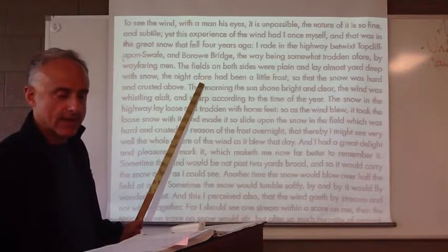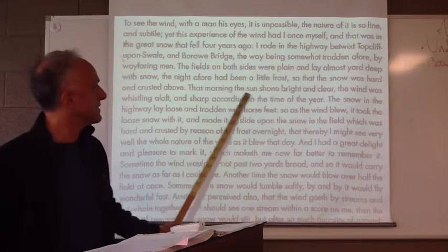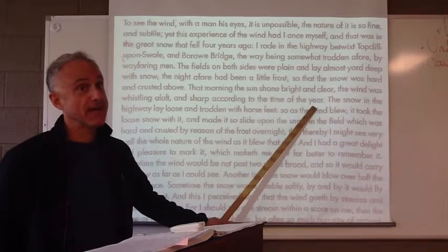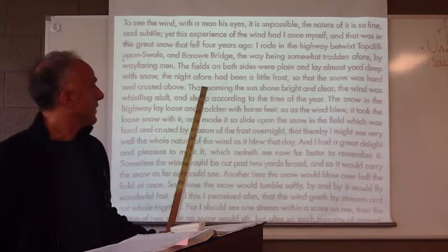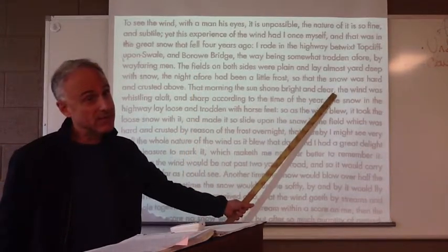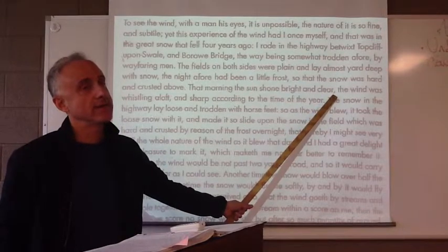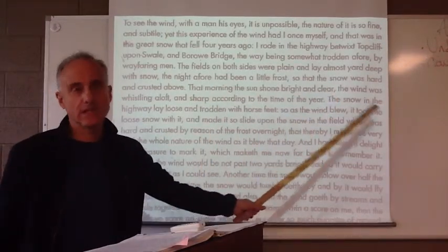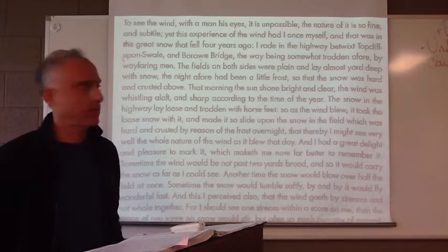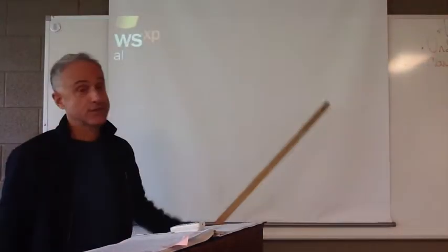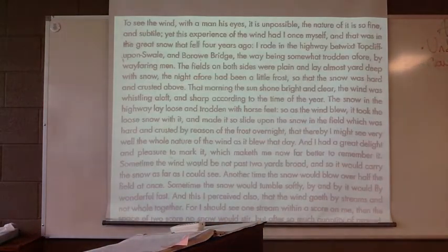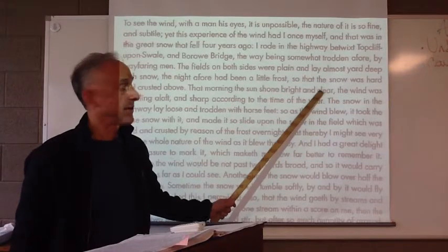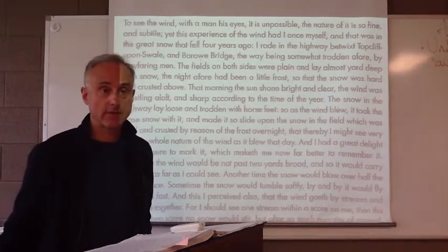Moving on, we find: 'That morning the sun shone bright and clear. The wind was whistling loft and sharp according to the time of the year.' There are a few things going on here. We have one independent clause — it stops here, but the author chooses purposefully to have one run-on in this whole passage. He put it there purposefully. He wants this sentence to continue on, to be lengthier, to express the flowing of the wind. He allows it to continue on rather than creating an end stop, overriding the grammatical rule to get the effect.